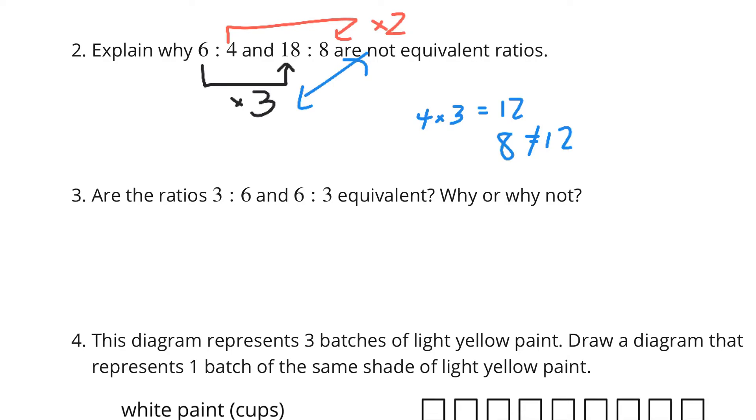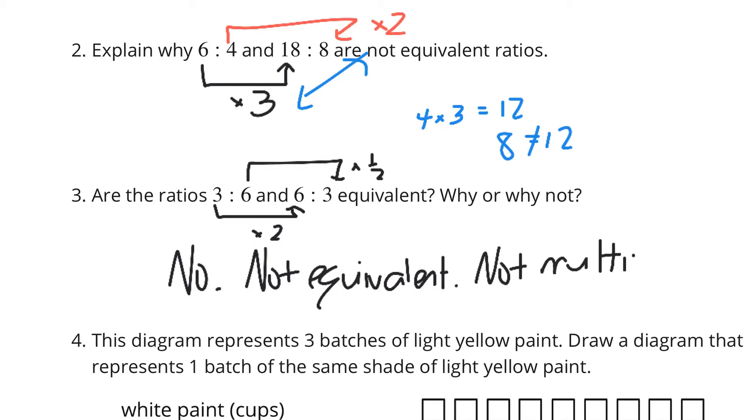Now, are the ratios 3 to 6 and 6 to 3 equivalent? Why or why not? Same kind of logic here, right? If I take 3 times 2, I get 6, but then for 6 to 3, it's times 1 half, so no, not equivalent. Not multiplying by same number.